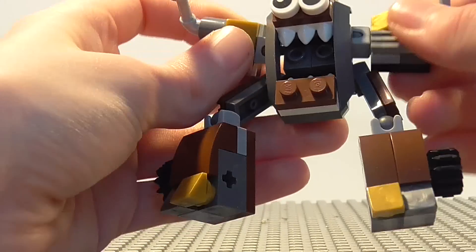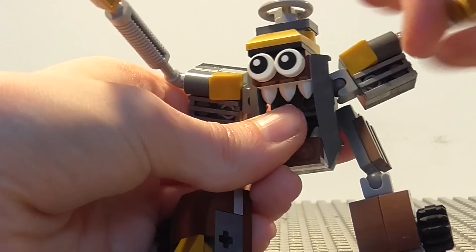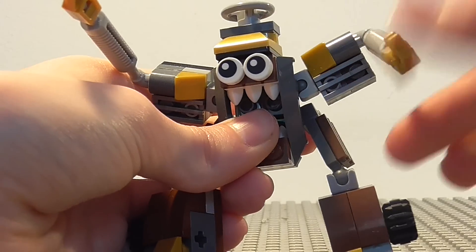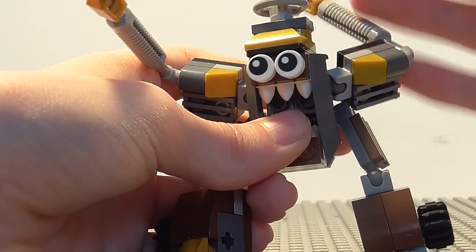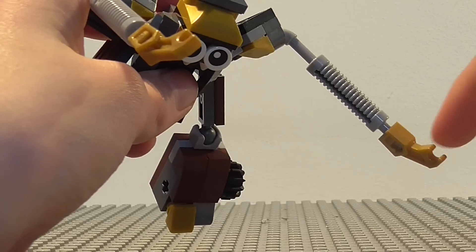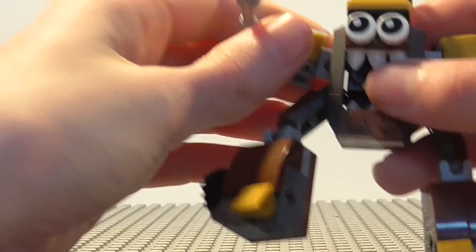So again, the arms are on shoulder joints here and then also the truck pipe things. Again, you can spin around and then he's got these exo-force limb pieces as his hands.